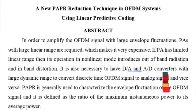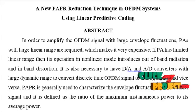In order to amplify the OFDM signal with large envelope fluctuations, PAs with large linear range are required, which makes it very expensive. If PA has limited linear range, then its operation in nonlinear mode introduces out-of-band radiation and in-band distortion.